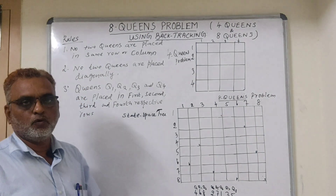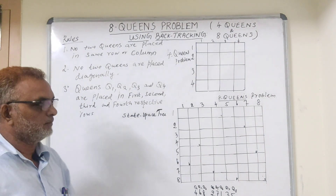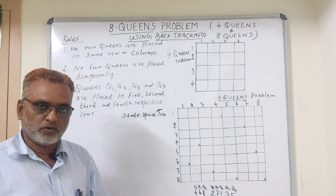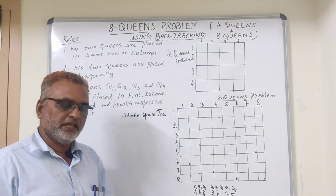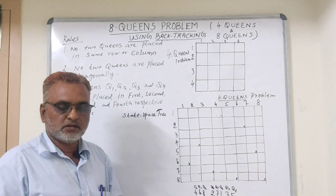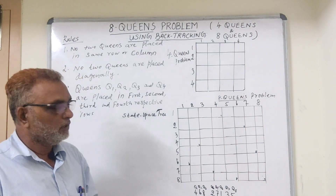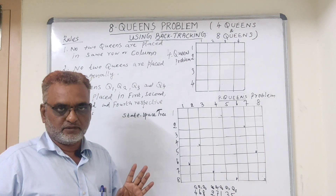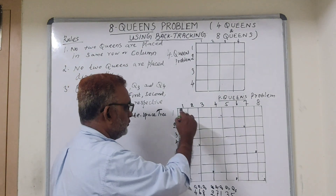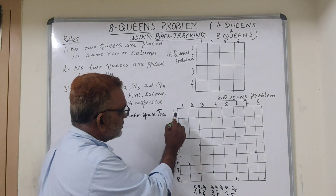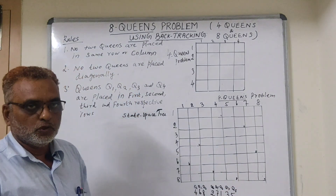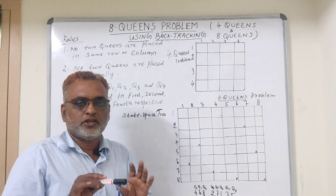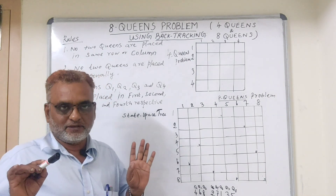Let me explain what the 8 queens problem is. If you take a chess board, it contains 8 by 8, totally 64 cells. We have to place 8 queens on the 64-cell chess board in such a way that the queens should not attack each other. The queen can move horizontally, vertically, and diagonally. So we have to place these queens such that they should not get attacked by each other. This is the problem.